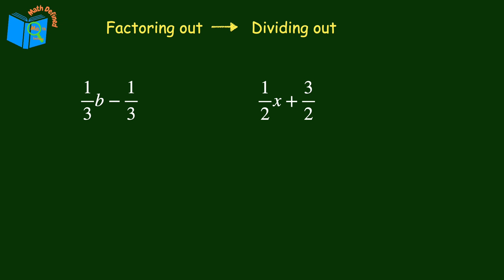Let's start with this expression on the left, one-third b minus one-third. We need to factor out the coefficient. Remember, the coefficient is the value being multiplied to the variable, which in this expression is one-third.